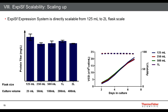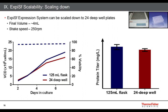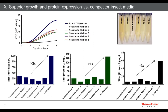The XPSF system has been optimized for flexibility and scalability, with protocols developed from 125 mL shake flask up to 2-liter shake flask. Work is ongoing to optimize the system for higher scales including bioreactors and wave bags. The system can also be scaled down to 24-well or 12-well plate format for screening multiple clones, with comparable titers to flask scale that can be transferred to larger scales as needed.